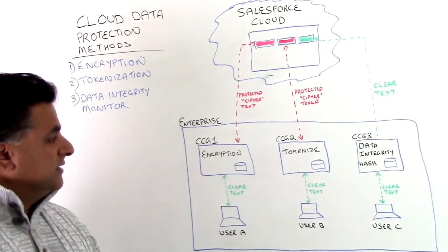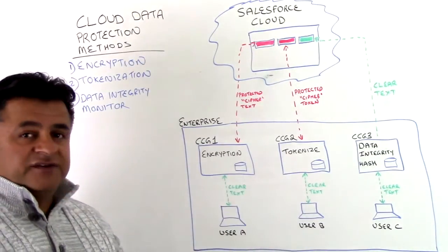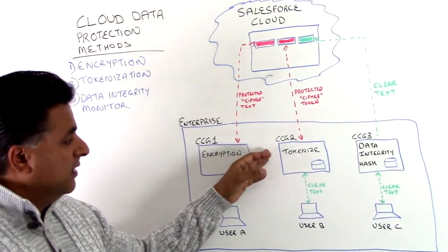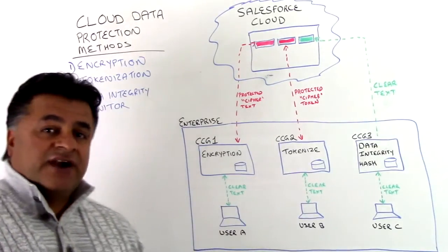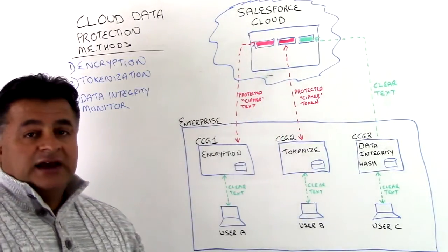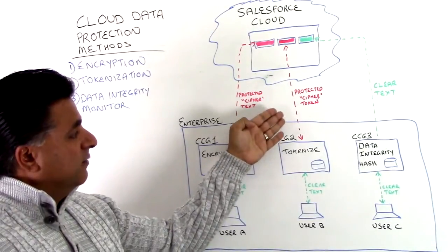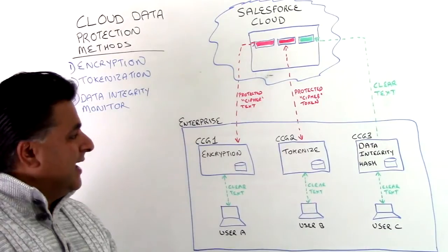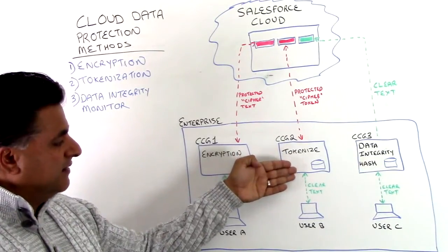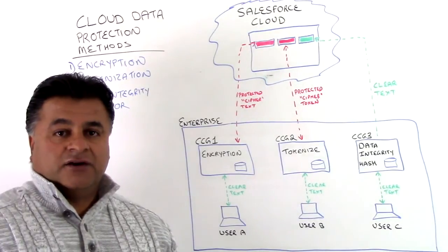Now let's talk about the second method, which we call tokenization. User B can enter their information using the same browser and access the Salesforce Cloud. As they hit Cypher Cloud gateway number two, that information is actually getting tokenized. The data never actually leaves the enterprise premise, but a token makes its way into the Salesforce Cloud as a reference to that actual data set within the enterprise. We're calling it a Cypher token. As the user accesses that information, the protected token comes back into the gateway, gets detokenized, and a clear version of that data is represented in the browser.